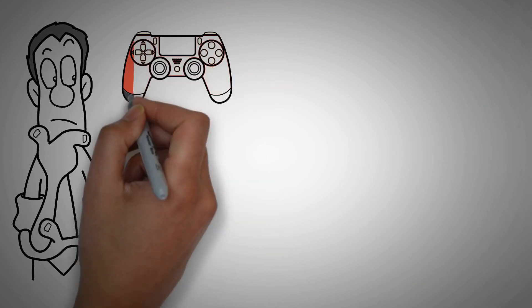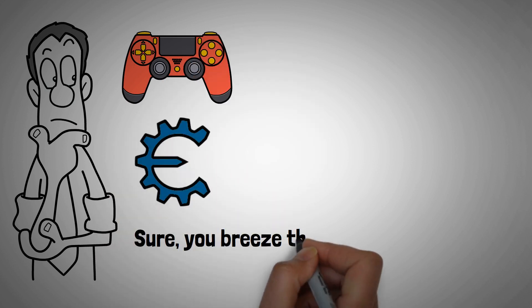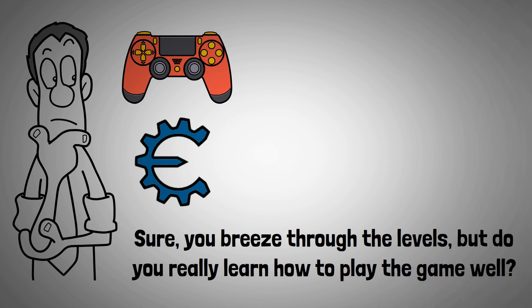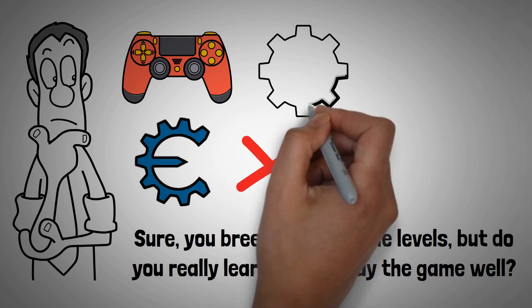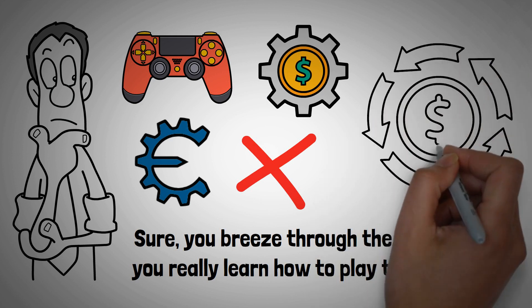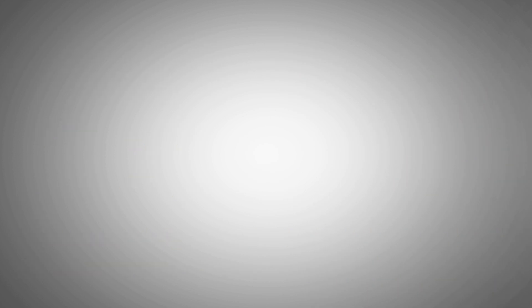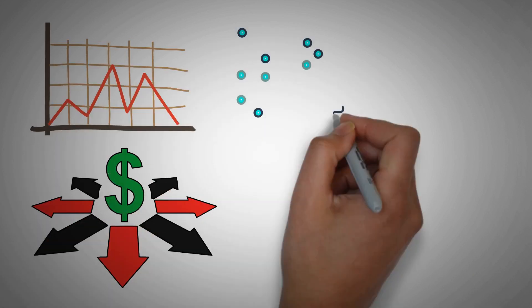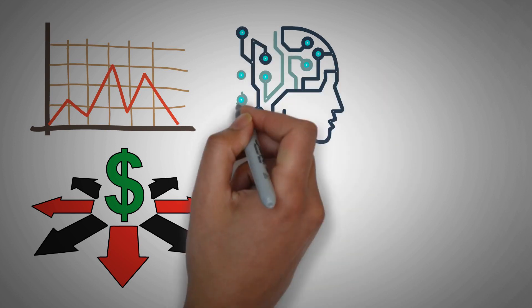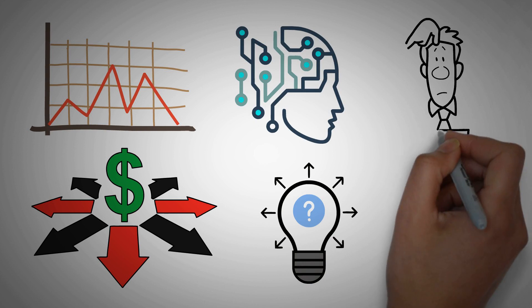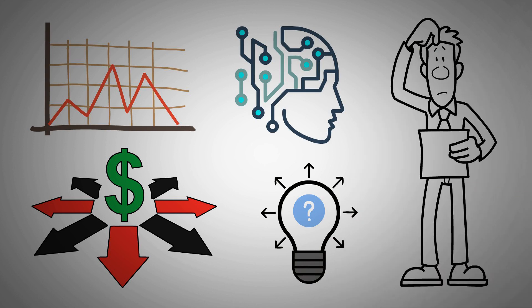Think about when you're playing a video game with cheat codes. Sure, you breeze through the levels, but do you really learn how to play the game well? Not so much. Now apply that to managing your finances. The financial world is like a big, unpredictable game. The markets go up and down, new opportunities pop up, and sometimes things go sideways. If you're always letting AI do the thinking and problem-solving for you, you might not develop the skills you need to navigate these twists and turns.